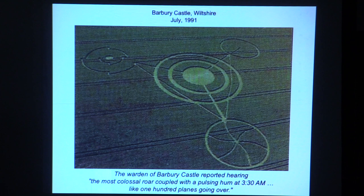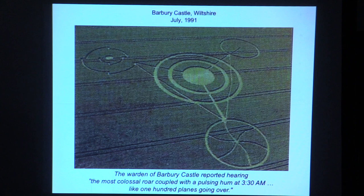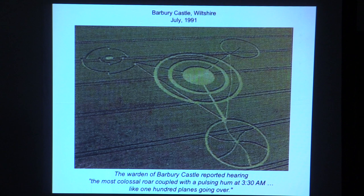In 1991, imagine being the warden of Barbary Castle at 3:30 a.m. and hearing the most colossal roar coupled with a pulsing hum like 100 planes going over — with no idea what was going on. The next morning there was the crop circle to end all crop circles. I discovered crop circles from a book called Secrets in the Fields by Freddy Silva, sitting on a friend's kitchen table. This picture was on the front cover. He has a lot of documented reports, though he takes liberties with conjectures.